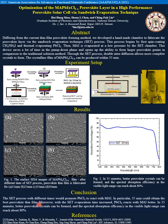So the conclusion is that the SET process with different times would promote the lead chloride to react with MAI. In particular, 35 minutes could obtain the best perovskite thin film.